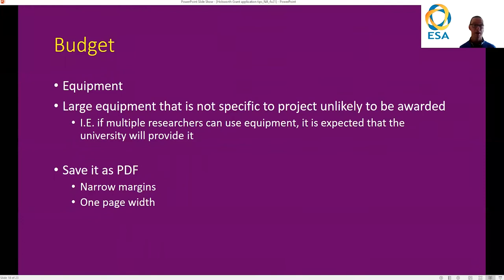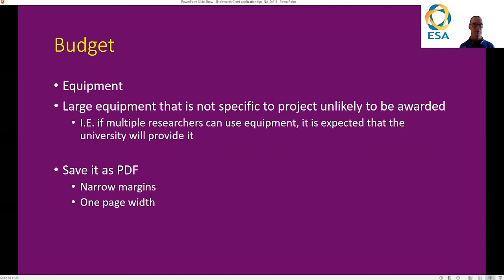When you are asking for equipment, make sure you are asking for equipment that is specific to your project. Don't ask for equipment that might be really useful for your lab and four or five individuals can use — that's unacceptable. That should be equipment that your university or supervisor provides for you. It should be equipment specific to your project that you will use throughout the project's lifetime. When you're doing your budget, save it as a PDF. The key thing is when you do save it, save with narrow margins and make it one page width so we can see all the items and when you request them through the years. If you just save your Excel spreadsheet as is, the budget width goes over two pages and it's really difficult to follow. Go to the checkbox that says 'one page width' and save it like that.